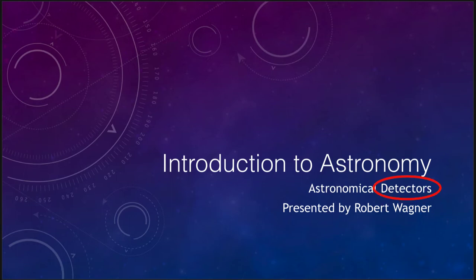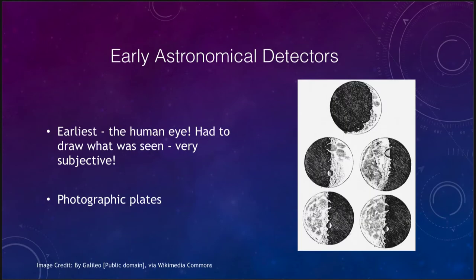There are a number of different astronomical detectors that have been used over the years, and we're going to look at a few of those over the course of this lecture. The very first one that would have been used was the human eye — that was how we observed what we saw. This goes back to prior to the telescopic era, and it also applied for the first couple of centuries that telescopes were used.